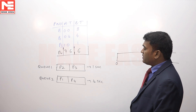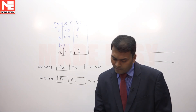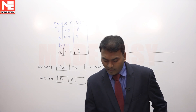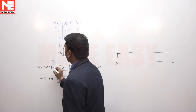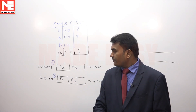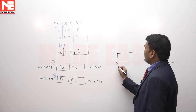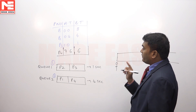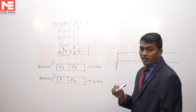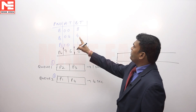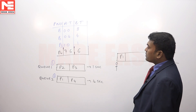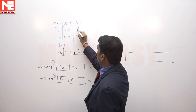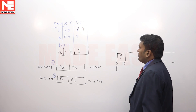Time always starts at 0. At time 0, P2 and P3 are not available. Only P1 is available, so we start with P1 first — no confusion. P1 is in Q2, so it gets 4 units of CPU time. We execute P1 for 4 units; remaining time for P1 is 4. Present time is now 4.